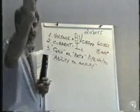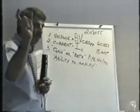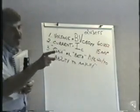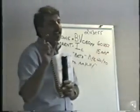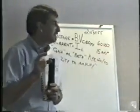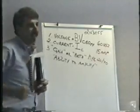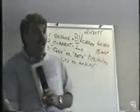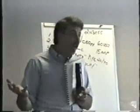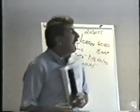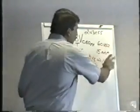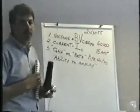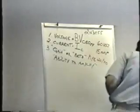One transistor comes off the assembly line with a gain of 35, the next one has a gain of 55, the next one has a gain of 23 and a half, and so on. They come off the assembly line and they could have any kind of gain. So they give you a range — this transistor will have a gain of somewhere between 20 and 70.